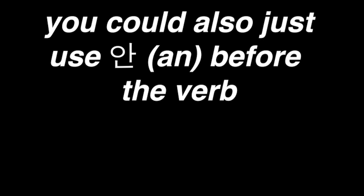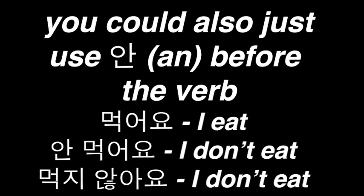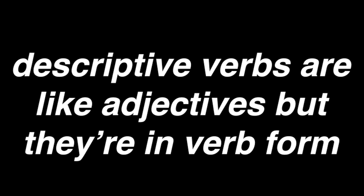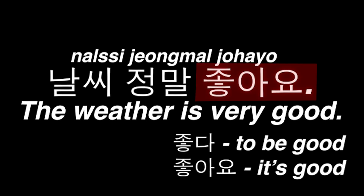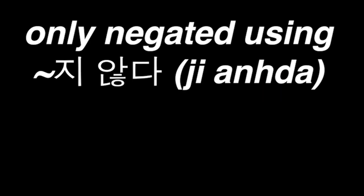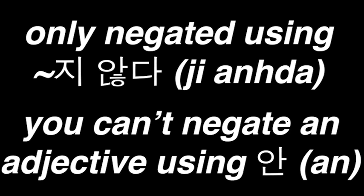A shorter way to negate a verb is by putting 안 before it — 먹어요 is 'I eat,' but 안 먹어요 is 'I don't eat,' same as 먹지 않아요. There are two types of verbs in Korean: action and descriptive. A descriptive verb is actually an adjective, like 'to be scared,' 'to be happy,' 'to be cold.' For example, 날씨 정말 좋아요, 'the weather is very good,' uses the verb 좋다, 'to be good,' conjugated in the present tense. Descriptive verbs can only be negated by adding the 지 않다 construction — you can't use the 안 prefix.